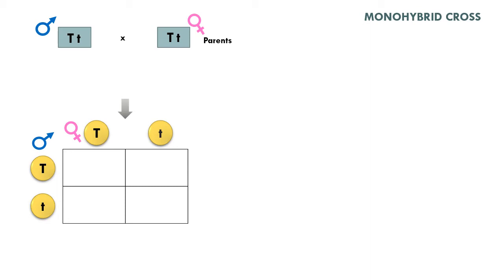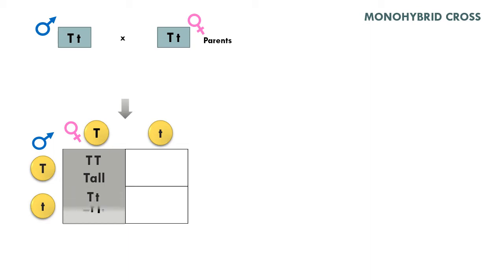Let us start filling up the squares to show the resulting genetic combinations. If a paternal gamete carrying the dominant allele unites with a maternal gamete also carrying a dominant allele, we expect that the resulting offspring will be homozygous dominant for the tall trait. If the paternal gamete carries a recessive allele while the maternal gamete carries a dominant allele, the resulting offspring will be heterozygous, but the tall trait will still be expressed as the phenotype.